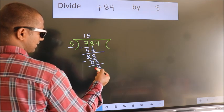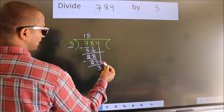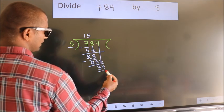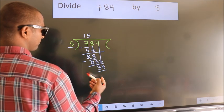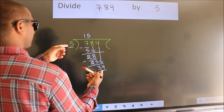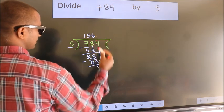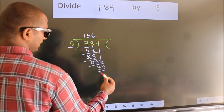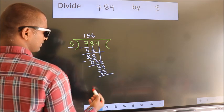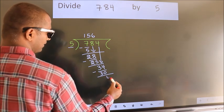After this, bring down the beside number. So, 4 comes down. So we have 34. A number close to 34 in the 5 times table is 5 sixes, which is 30. Now we subtract. We get 4.